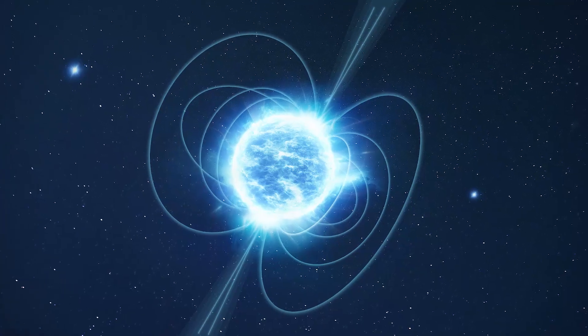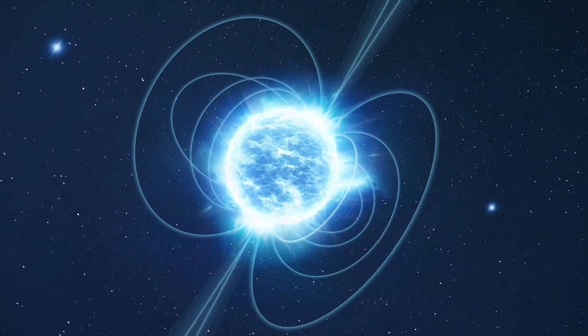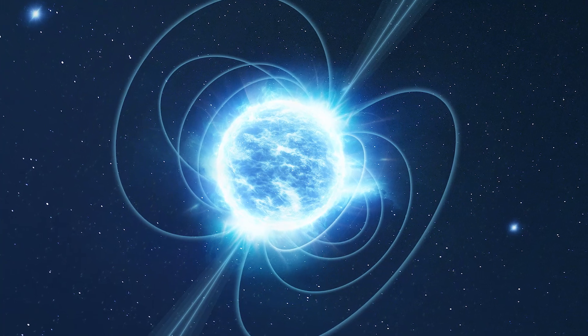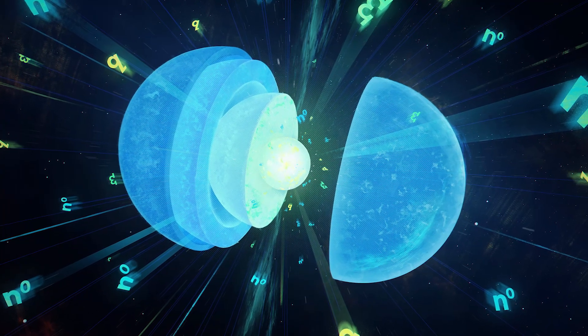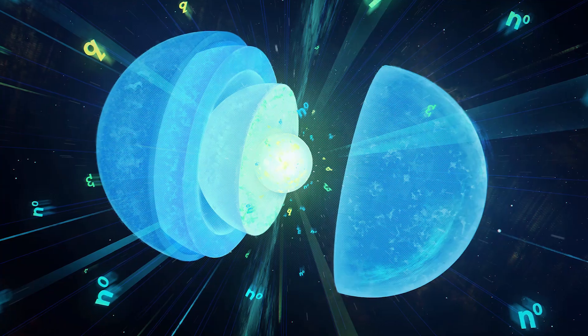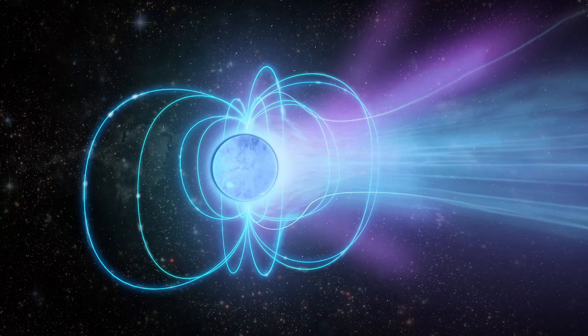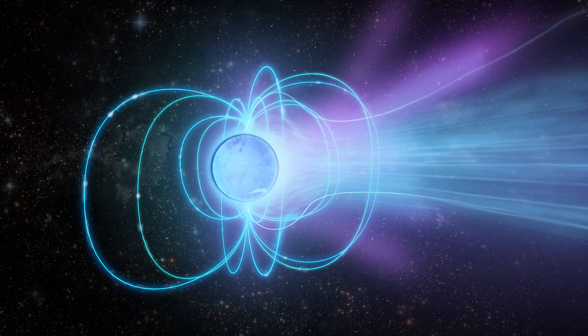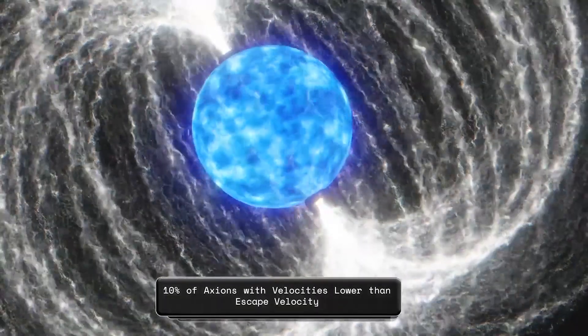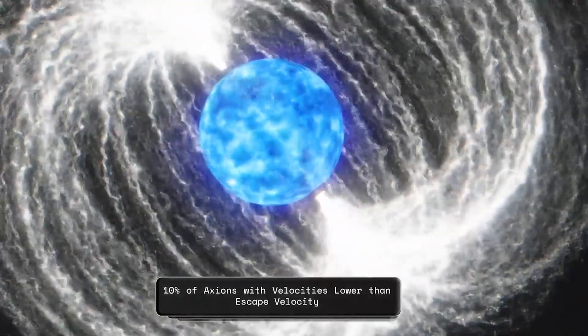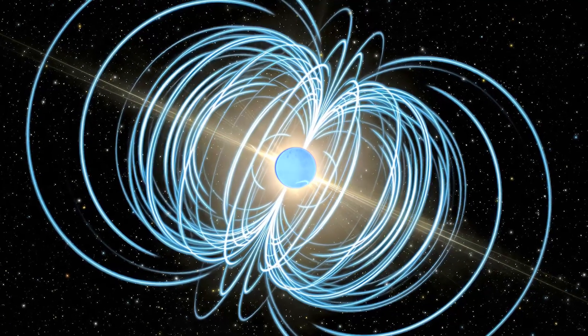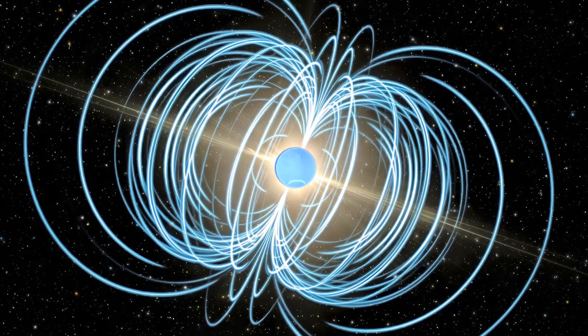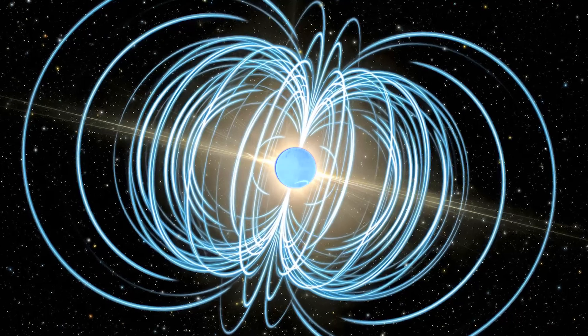Even if the axions produced by a neutron star aren't immediately detectable through the conversion to radio waves, there is one more way we can spot them. Around 90% of axions created by a neutron star are expected to escape into space, with some of them being converted into photons on the way. But the other 10% are created with velocities below the escape velocity of the neutron star, which means they fall back and end up orbiting the star. And by the way, the escape velocity of a neutron star is around half the speed of light, so even the captured axions can be traveling pretty fast. These trapped axions build up in this increasingly dense cloud around the star over thousands or millions of years.